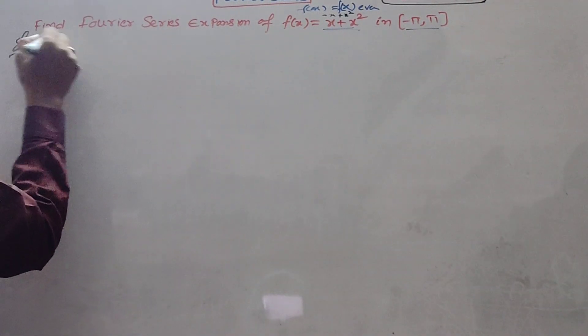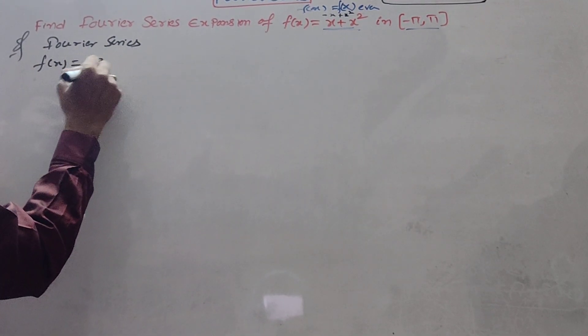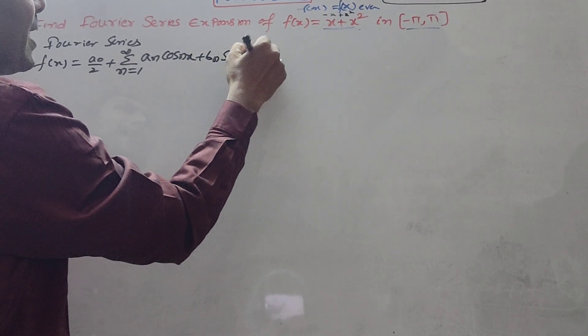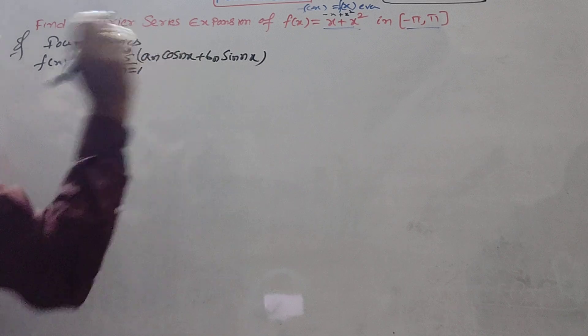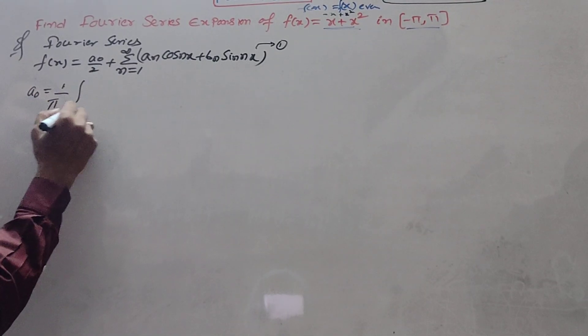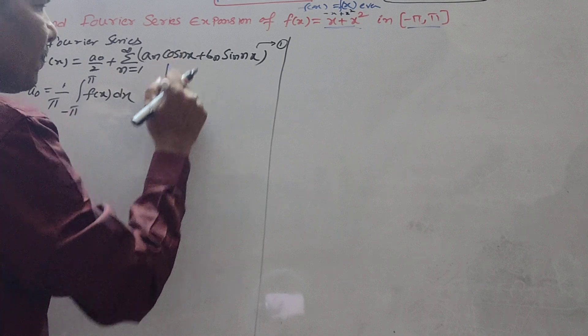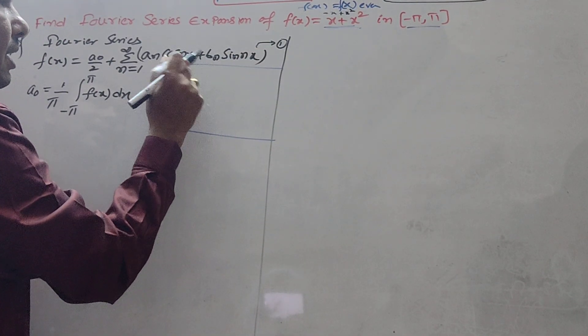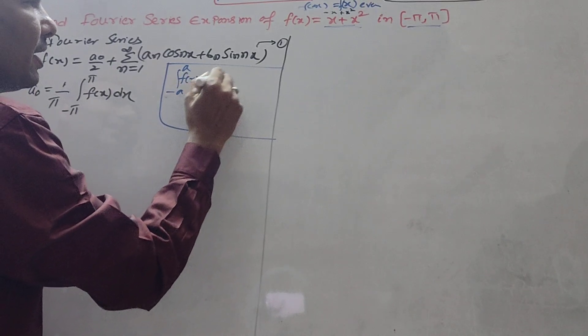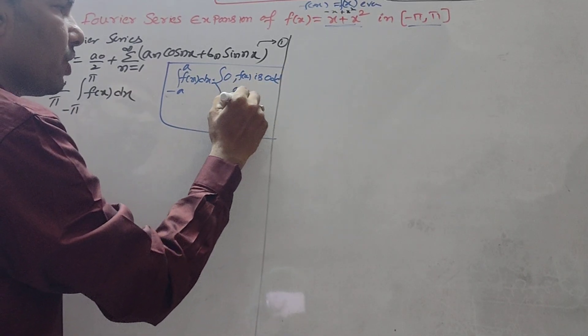The Fourier series is: f(x) = a₀/2 + summation n=1 to infinity of aₙ cos nx + bₙ sin nx. I am treating this as equation number 1. The a₀ formula is 1/π integral from minus π to π of f(x) dx.